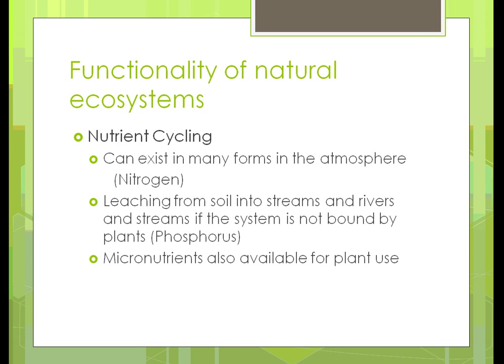Nutrients can exist in many forms in the atmosphere — in liquid or vapor forms. Nitrogen can also leach from the soil into streams and rivers; any element can do that. Phosphorus is a notable example — it used to be used in soap to help clean dirt off clothes but was banned due to environmental concerns. There are two types of nutrients: macronutrients and micronutrients, meaning nutrients needed in larger versus smaller amounts. There are about 17 different nutrients we'll examine.